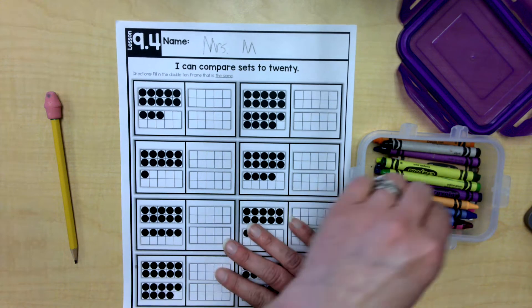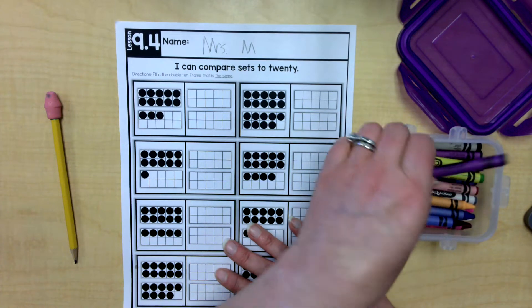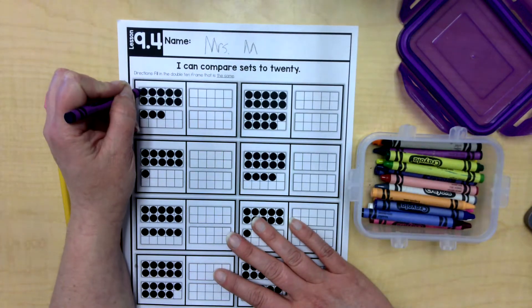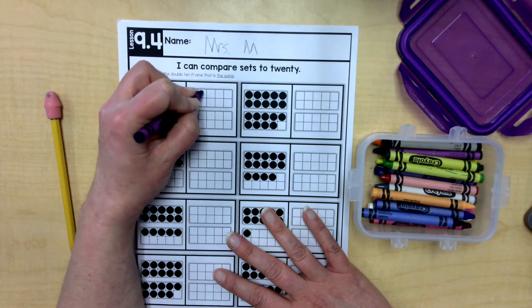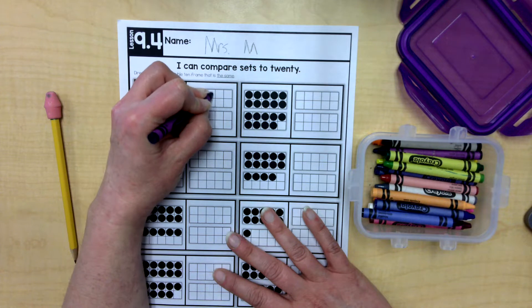Okay, I think I can do that. I'm going to pick a color, maybe purple. Well, this one I already know has 10. So I'm going to color in 10. There we go.